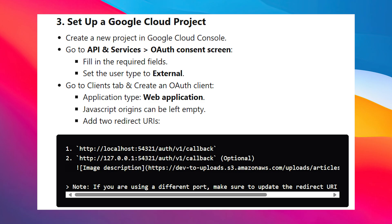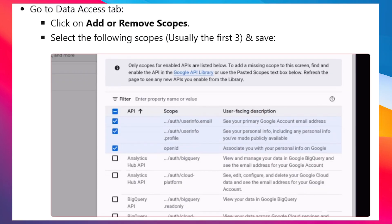Go to API and Services and navigate to the OAuth consent screen. Fill in the required fields and set the user type to External. Then go to the Clients tab and create an OAuth client — the application type should be Web Application and JavaScript origins can be left empty. Add two redirect URIs as shown. Now go to the Data Access tab, click on Add or Remove Scopes, select the following scopes (usually the first three), and click Save.